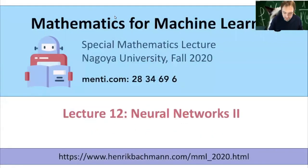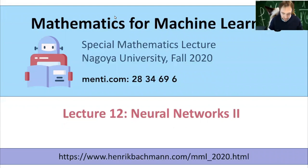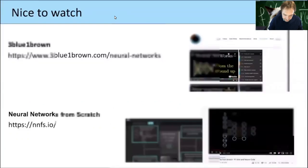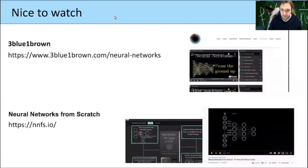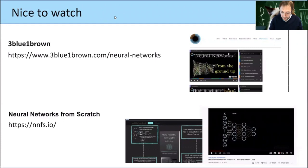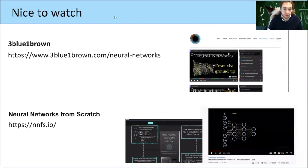Welcome to lecture 12. Today we will continue talking about neural networks. As mentioned last time, there are two nice sources for an overview — in particular, these videos by 3blue1brown. He also explains roughly what we will do today, namely backpropagation to calculate the gradient for the cost function of a neural network.